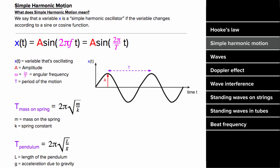What's a simple harmonic oscillator? A simple harmonic oscillator is any variable whose change can be described by a sine or cosine function. The variable that's changing as a function of time could be the vertical position of a mass on a spring, the angle of a pendulum, or any other simple harmonic oscillator.